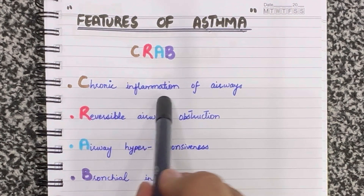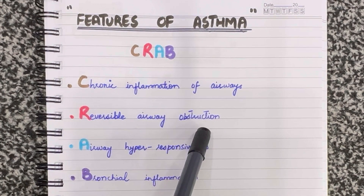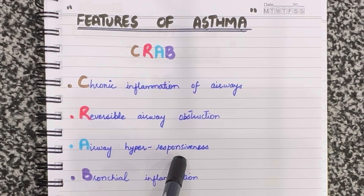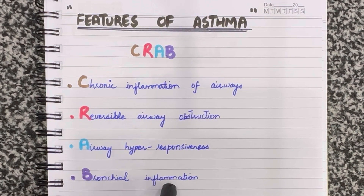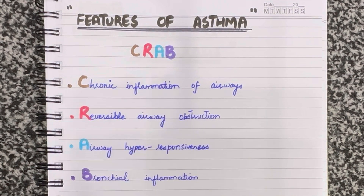So to summarize: chronic inflammation of airways, reversible airway obstruction, airway hyper responsiveness, and bronchial inflammation — CRAB. Thank you for watching.